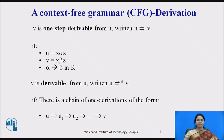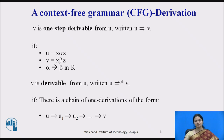Here we will see the method of deriving a CFG. V is one-step derivable from U, meaning U derives V. If U equals X alpha Z and V equals X beta Z, then we can write alpha produces beta in R, as X and Z are common in both. V is derivable from U, written as U derives V, and it can be used recursively — there is a chain of one-step derivations from U to U1, U1 to U2, and so on up to V, which is the terminal.